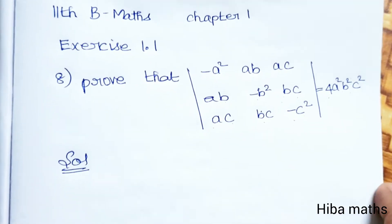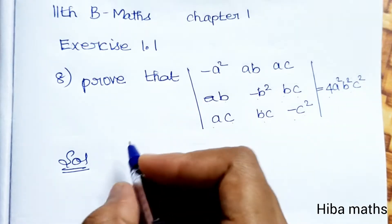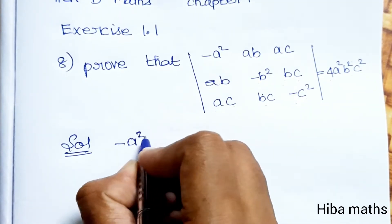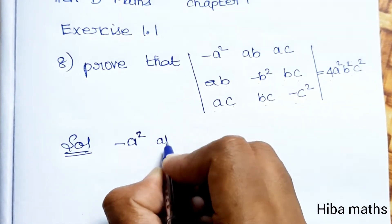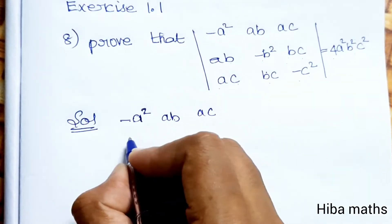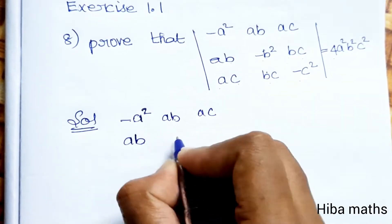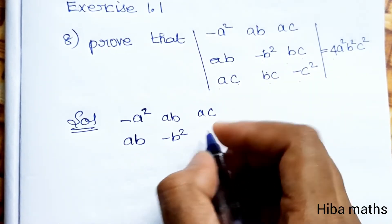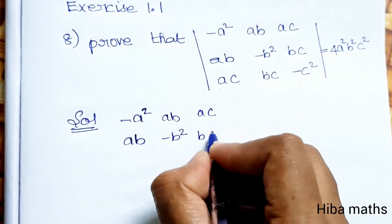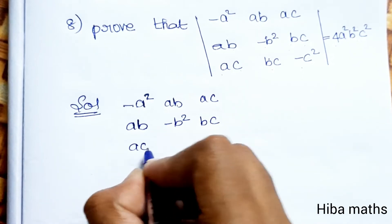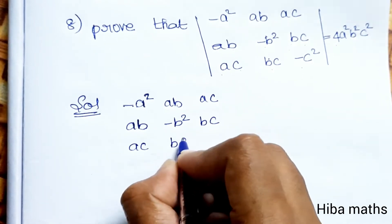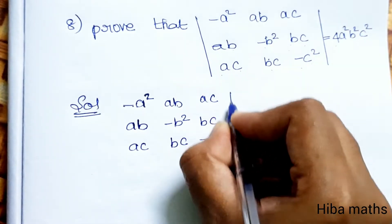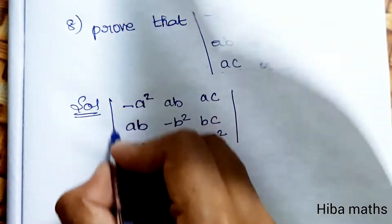So, this is the value. Let's take the given determinant: minus a-squared, ab, ac in row 1; ab, minus b-squared, bc in row 2; ac, bc, minus c-squared in row 3.